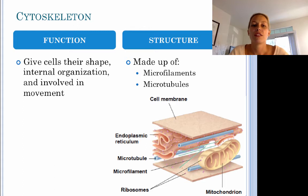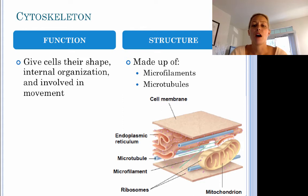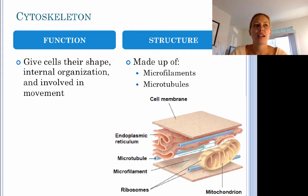The cytoskeleton is responsible for giving the cell its shape, its internal organization, and is also used in movement. It's made up of two fibers: microfilaments and microtubules. The organelles are not stationary within the cell — they can actually be moved like a train track, transported to different locations around the cell on these microtubules and microfilaments.